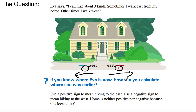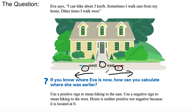The question is: if you know where Eva is now, how can you calculate where she was earlier? Use a positive sign to mean hiking to the east, and a negative sign to mean hiking to the west. Home is neither positive nor negative because it's located at zero, right in the middle of the number line — the starting point.